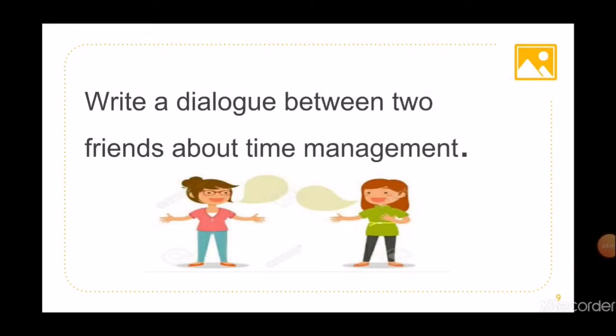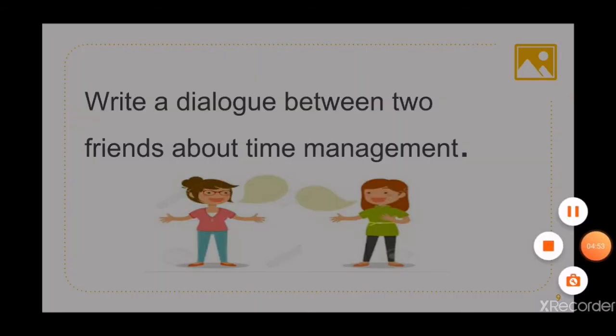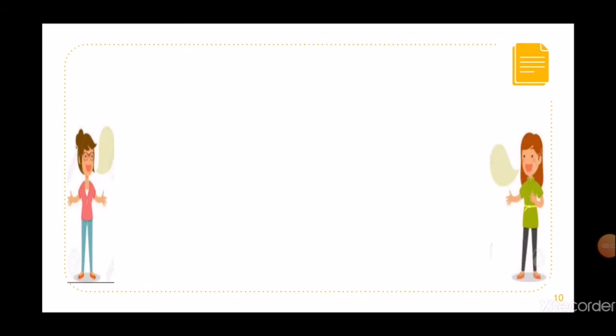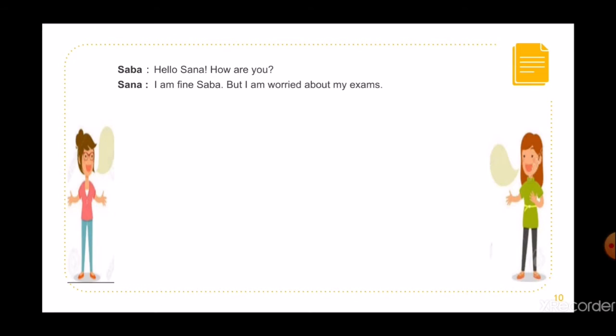Write a dialogue between two friends about time management. First, write the name of the character and put a colon, then write the statement. After that, write the name of the other character and put a colon — keeping the same space beneath the previous colon. Now write the dialogue of the second character.